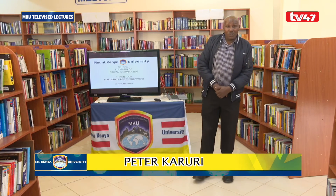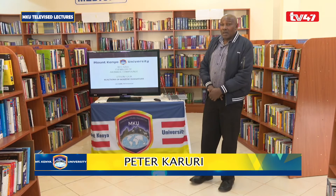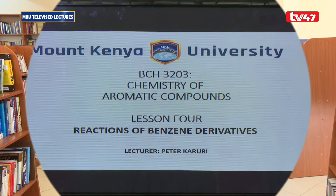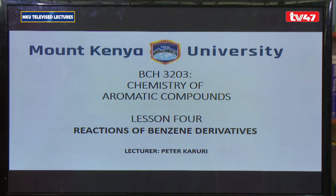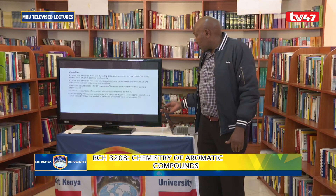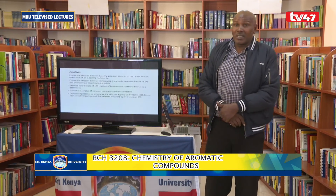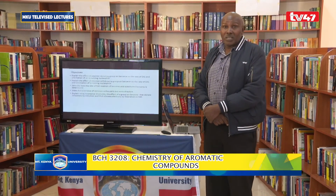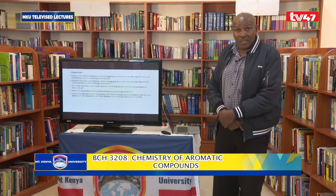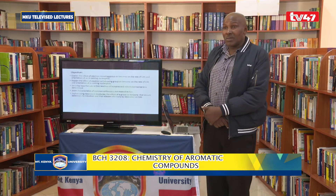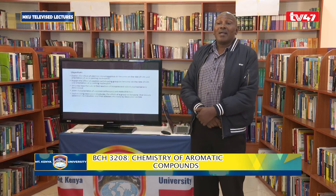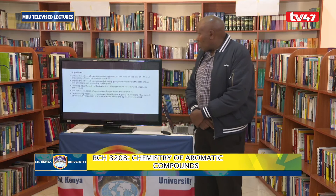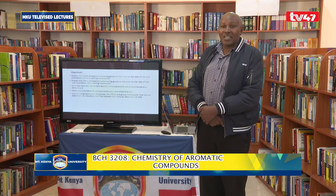Welcome to lesson four in the chemistry of aromatic compounds, BCH3203. This lesson is about reactions of benzene derivatives. We have already looked at lessons one, two, and three: lesson one covered aromaticity, lesson two covered nomenclature, and lesson three covered electrophilic aromatic substitution. Lesson four is an extension of lesson three.